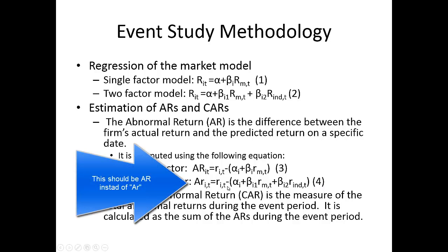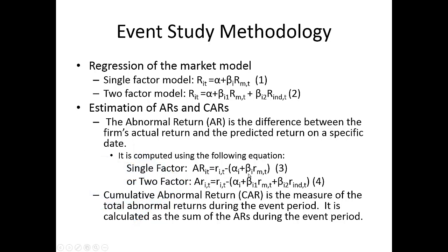The two-factor model is very similar. We take the firm's return on day T and subtract the intercept plus beta1 times the market return plus beta2 times the industry return. The cumulative abnormal return (CAR) is the measure of total abnormal returns during the event period — calculated as the sum of all abnormal returns during the event window — showing the net effect over the several-day period surrounding the event.